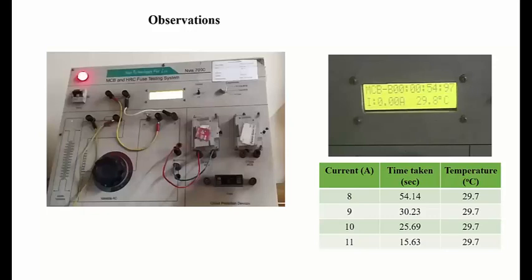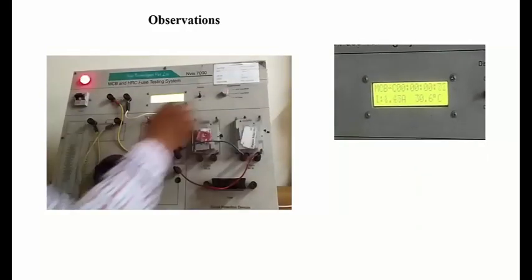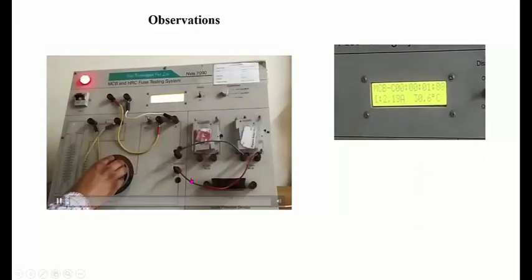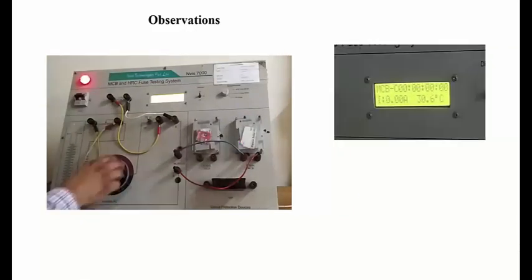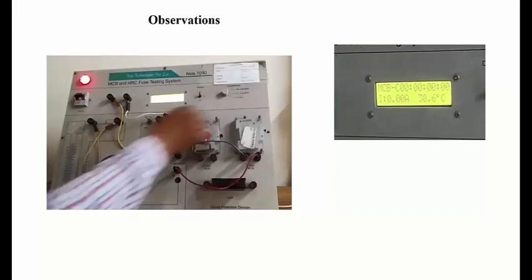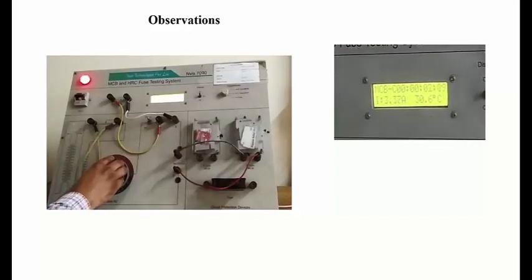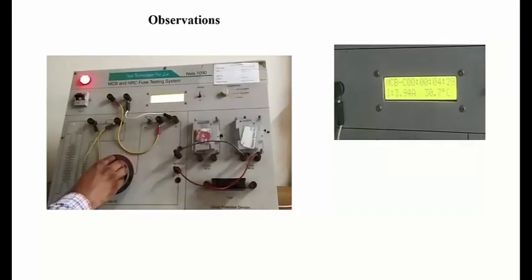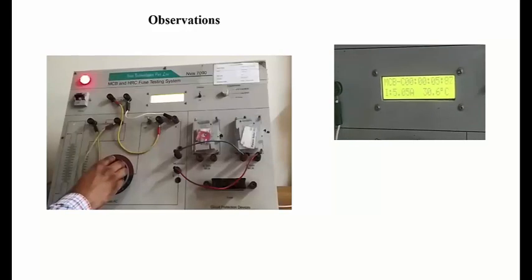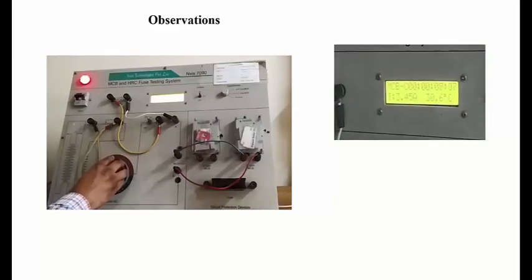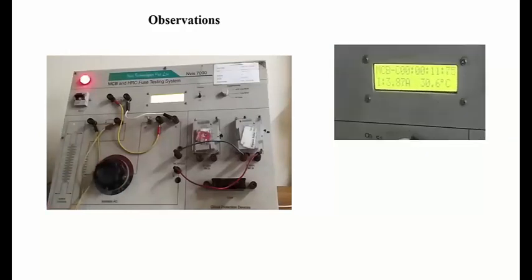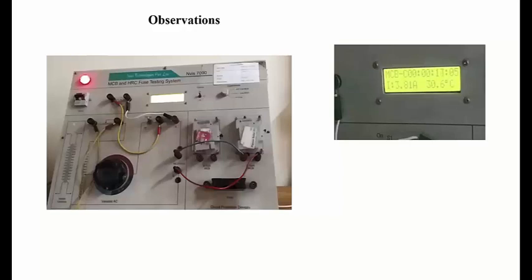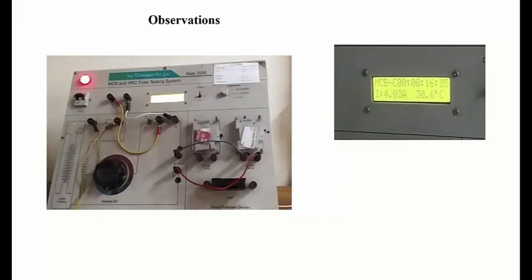In a similar way, for different values of current, we'll be obtaining different sets of readings. Now we'll be testing the type C MCB. The terminals shown in the figure are changed and connected to type C MCB. We'll maintain the current around 4 amperes for this type of MCB. The current is maintained using the rheostat.